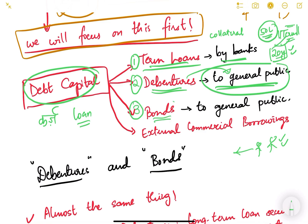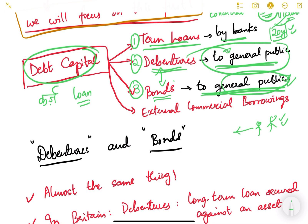Bonds are the third type, and bonds and debentures are more or less the same — we will see the difference shortly. Bonds are also issued to the general public. They are a kind of security that enables an issuer — a company or a government — to take money from the general public for development or investment purposes.